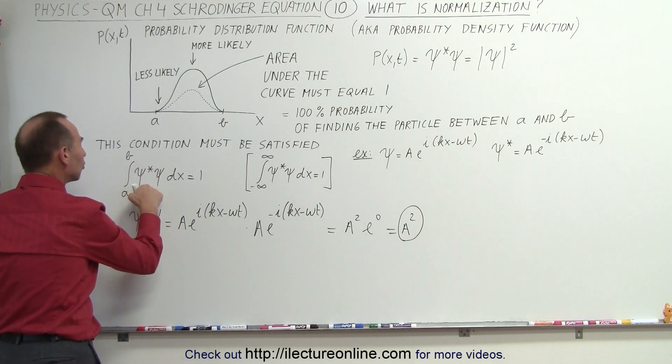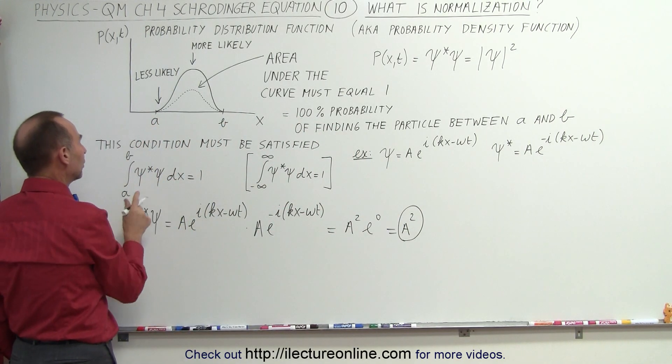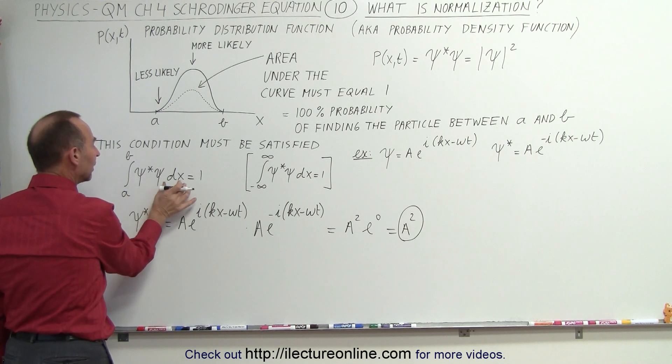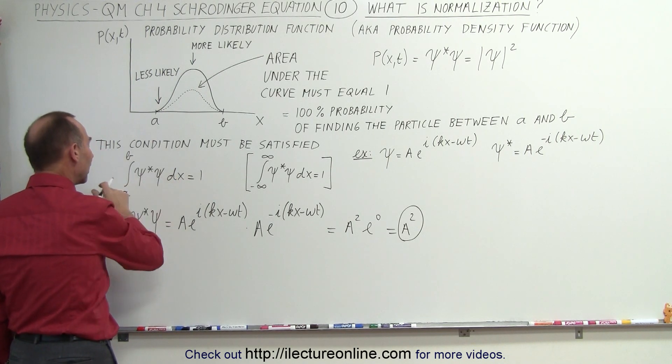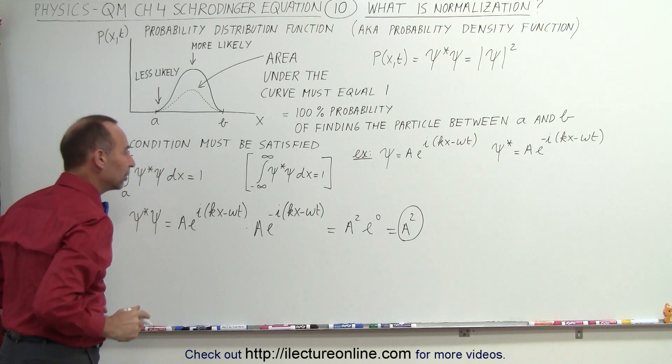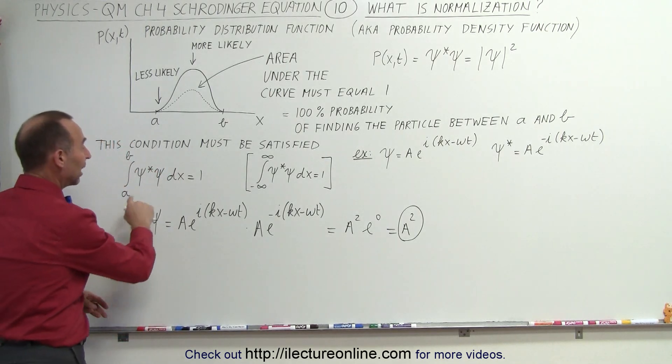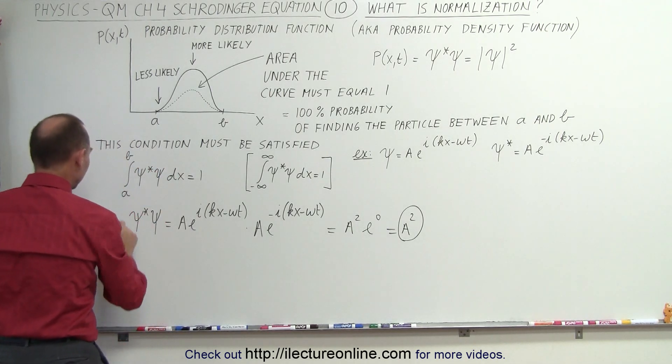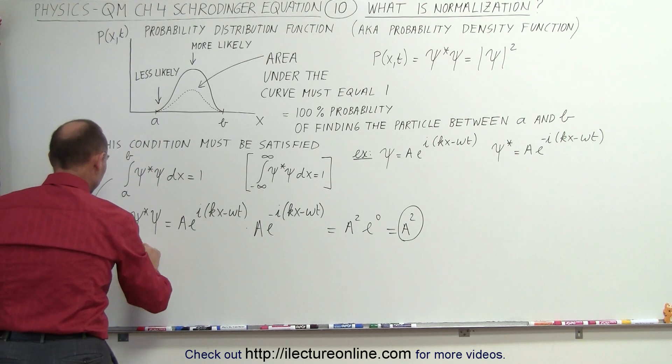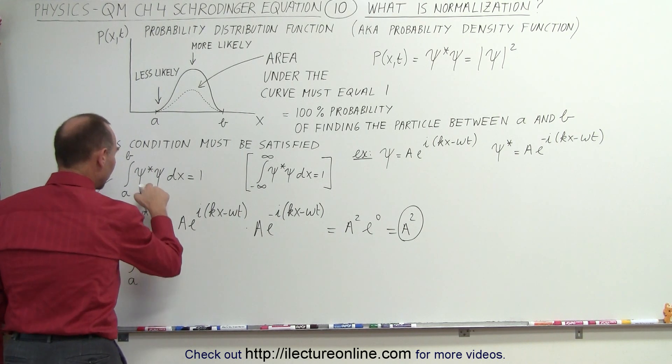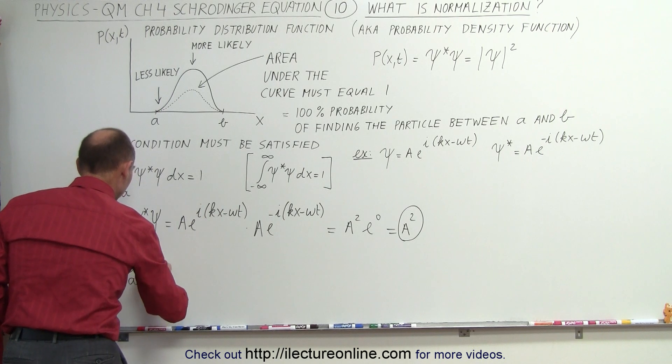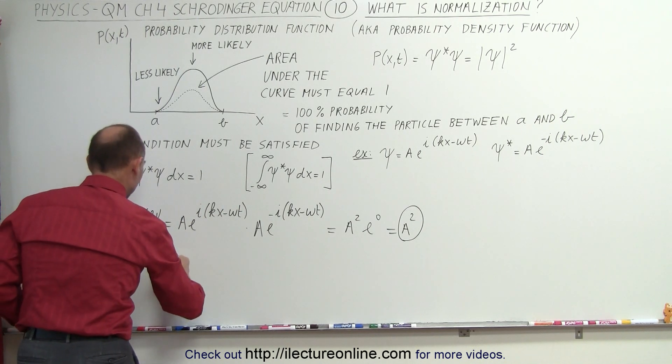Now we plug that into the condition that we must satisfy. We know that if we take that product, multiply times dx and integrate from a to b, where the particle can be, that should add up to one. So let's go ahead and do that. So we say that the condition, when we integrate from a to b of the product, which we now know is a squared, times dx, must equal one.